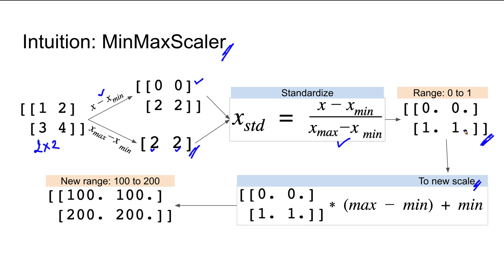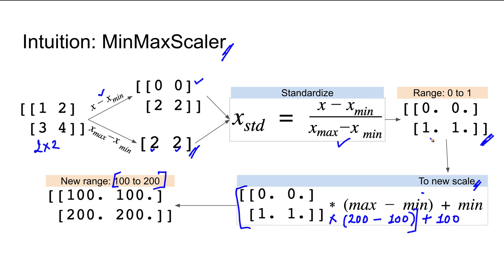We can also convert to a custom scale. If we need the scale to go from 100 to 200 instead of 0 to 1, we apply the formula: (200 - 100) * x_scaled + 100. Multiplying that by our earlier scaled matrix, we get an output matrix where the minimum value is 100 and the maximum value is 200. That's how the MinMaxScaler works.